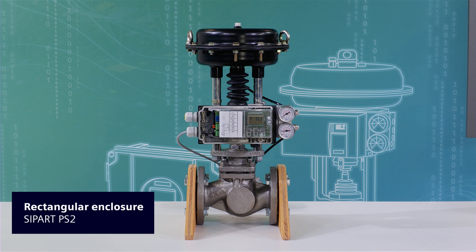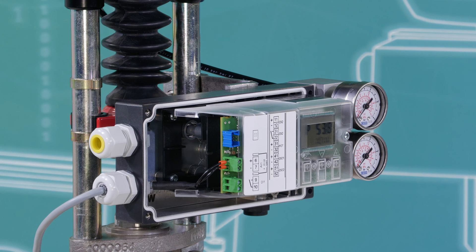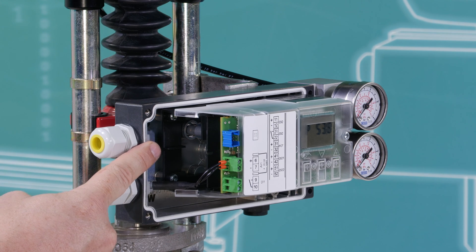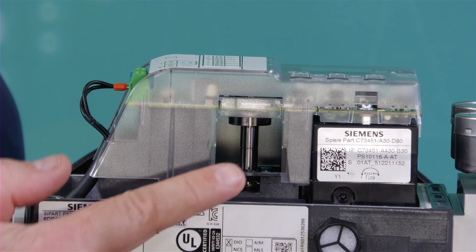Now you can see the rectangular enclosure. This version is also available without the transmission switch and without the friction clutch.